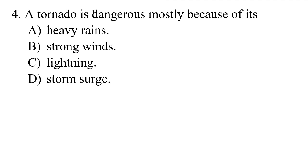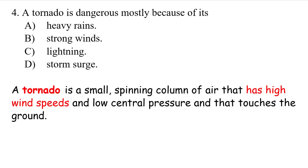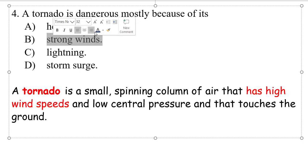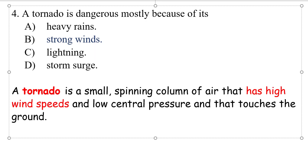Question 4: A tornado is dangerous mostly because of its heavy rain, strong winds, lightning, or storm surge? A tornado is a small spinning cloud of air that has high wind speed - meaning strong winds. The answer is B: strong winds. Please write all of these in your notebook.